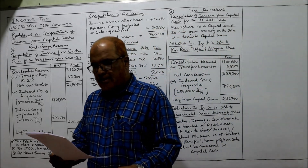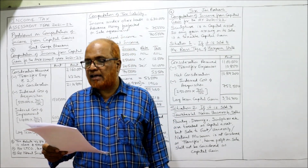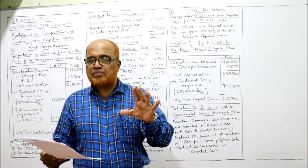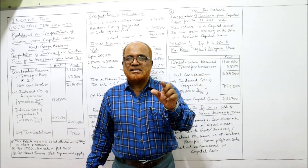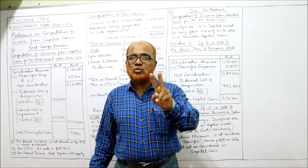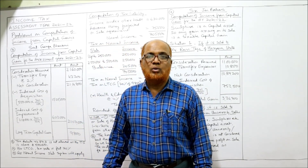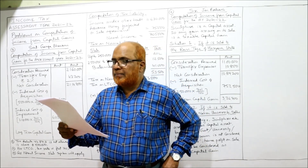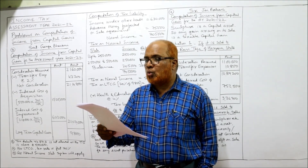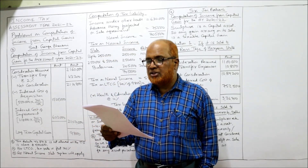Now see Problem Number 3. Srimati Ganga Bhavani purchased a residential house for rupees 5 lakh in 1997-98 — that means before 1st April 2001. As I explained in previous videos, if an asset is purchased before 1/4/2001, the assessee can choose the higher of: actual cost, or fair market value on 1/4/2001, as the cost of acquisition. During 2003-2004, she constructed two rooms at a cost of rupees 2 lakh 18,000.